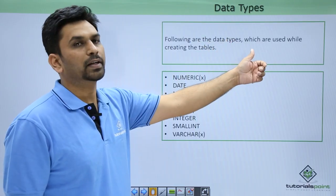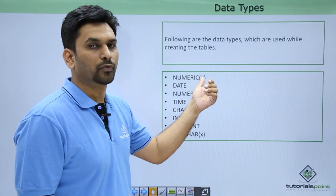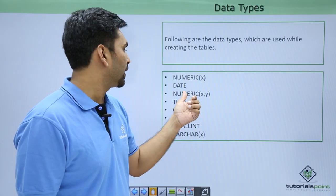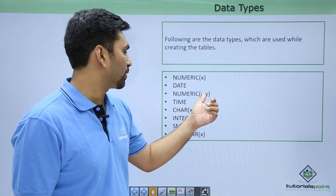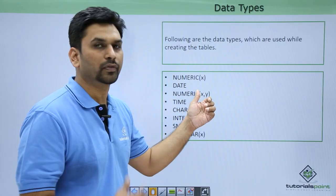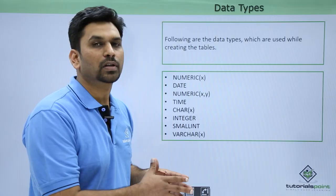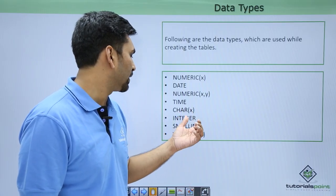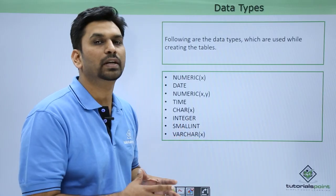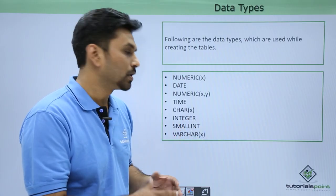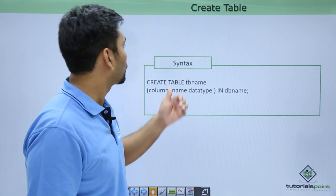We'll start with data types. The following data types are used while creating tables. You can use numeric and specify the field length. You can use date directly. For numeric with a decimal, X is the digits before the decimal and Y is after. You can use time, character for alphabets like names, integer for numbers which takes 8 bytes, small integer which takes 4 bytes, and varchar for both numbers and characters.